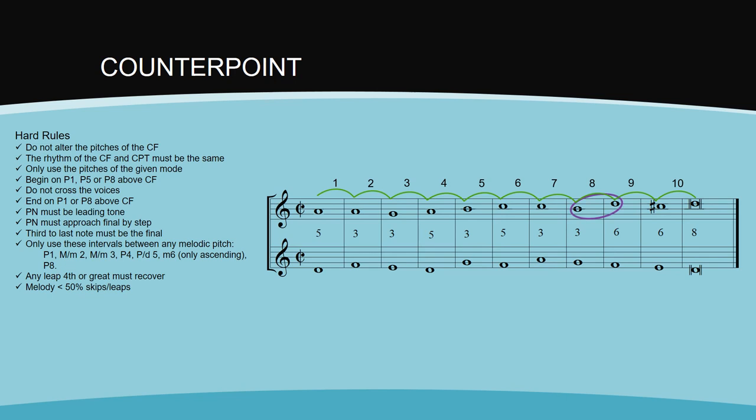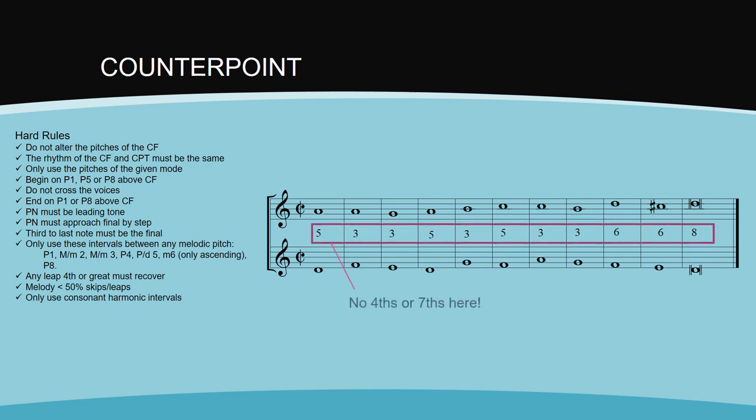Harmonically, you should only use the intervals of a major or minor third, perfect fifth, a major or minor sixth, perfect octave, or a major or minor tenth. These are all considered consonant intervals. Any type of fourth, seventh, augmented or diminished interval is considered dissonant and should not be used harmonically.